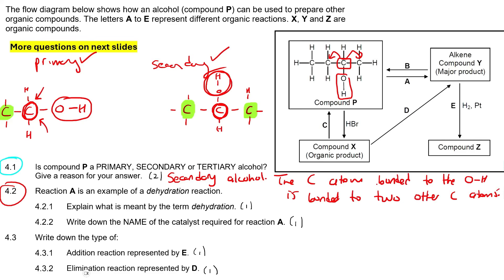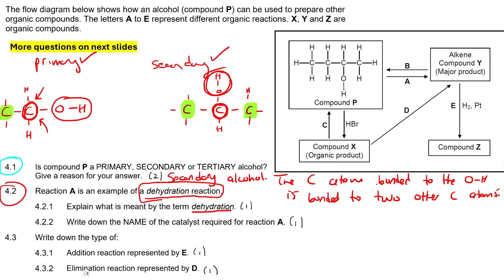Reaction A is an example of dehydration. Dehydration is definitely an elimination reaction where you eliminate water — just like if you eliminate too much water from your body, you are dehydrated. So this is going to be an elimination where you release water. If you look at this molecule, it's going to release water by losing this OH, and you'd also have to lose another hydrogen.